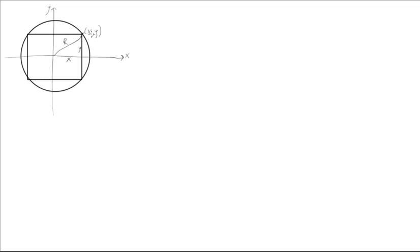The area of the square can be calculated as base times height. The base is 2x and the height is 2y, so we can say the area is 4xy.